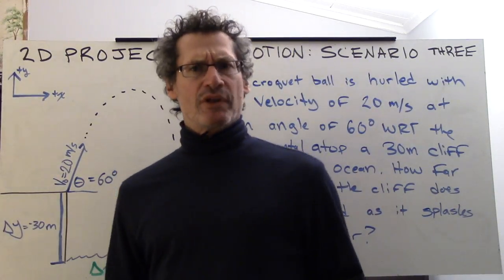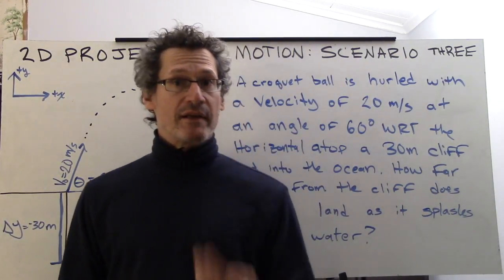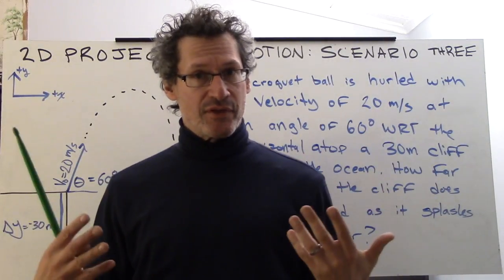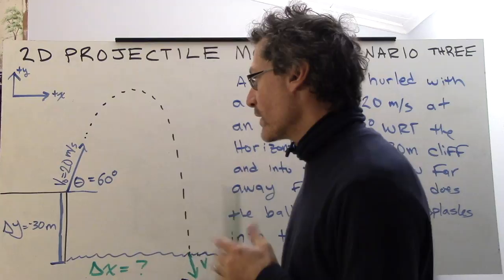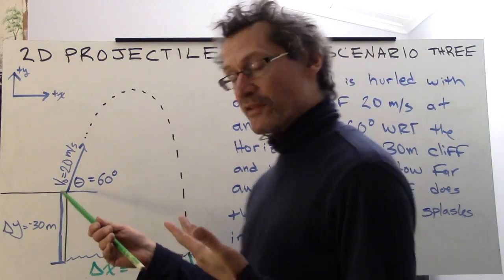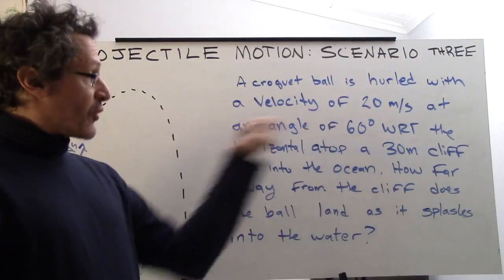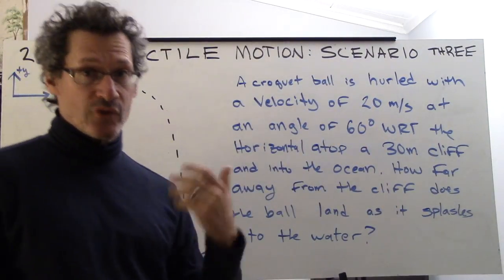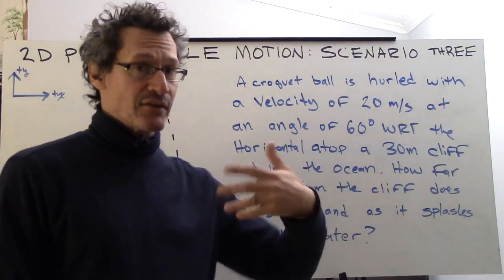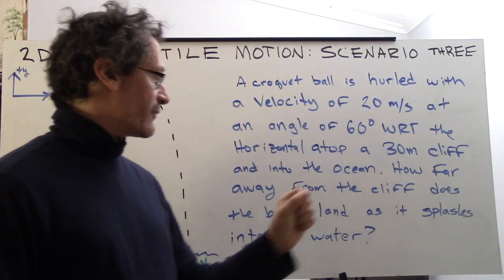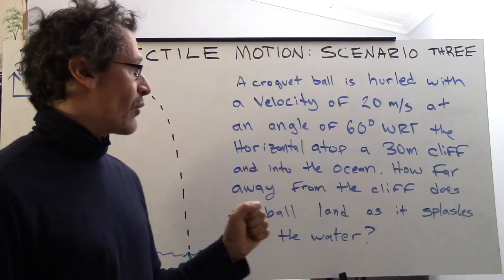2D projectile motion scenario 3. This scenario involves an asymmetric kind of situation. We've got a projectile from a platform or cliff at an angle of 60 degrees, and we want to find out how far away from the cliff the ball lands and splashes into the water.